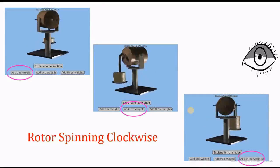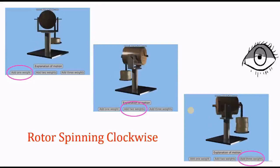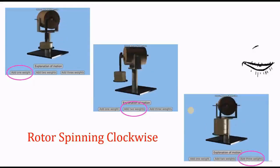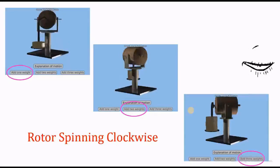The first one consists of a single weight, the second one two weights and the third one three weights. The third one which is having more weights is precessing at highest velocity.